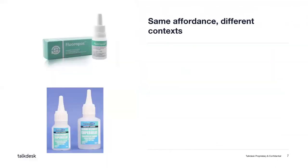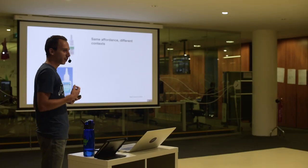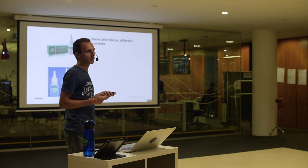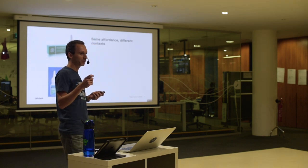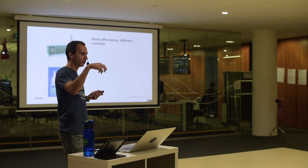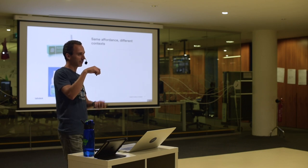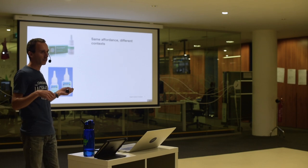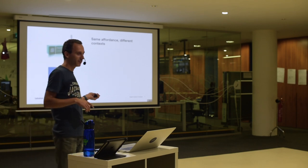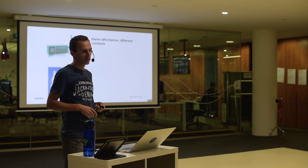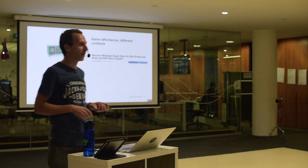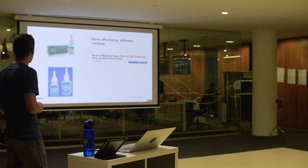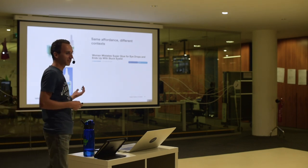Here's another example. At the top you have a jar of eye drops, and on the bottom, a jar of superglue. The affordance of the object is perfect for both situations — a jar whose sole function is to help you drop single drops of liquid. They both do a tremendous job at this, but if you mix the context, bad things can happen. The affordance is perfect for the object, but the context is different.